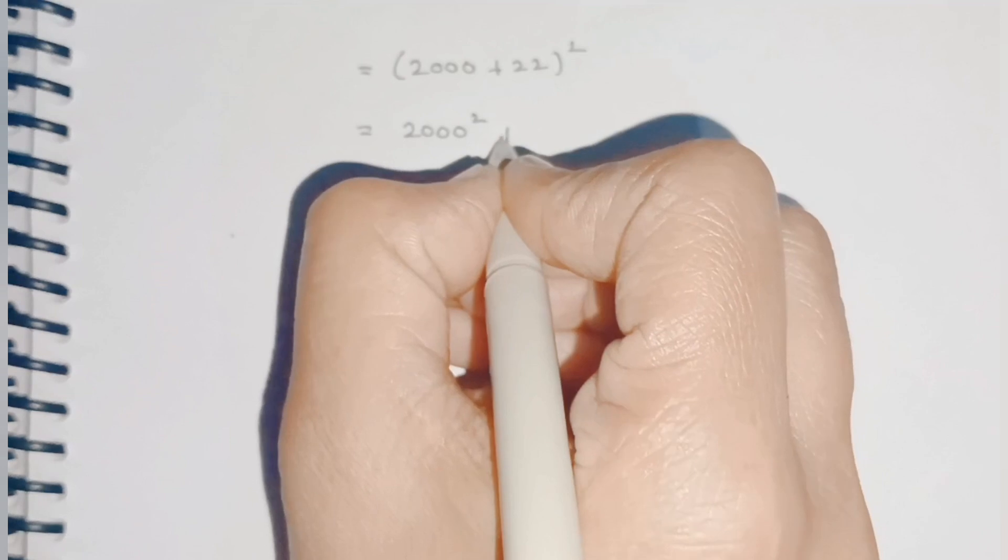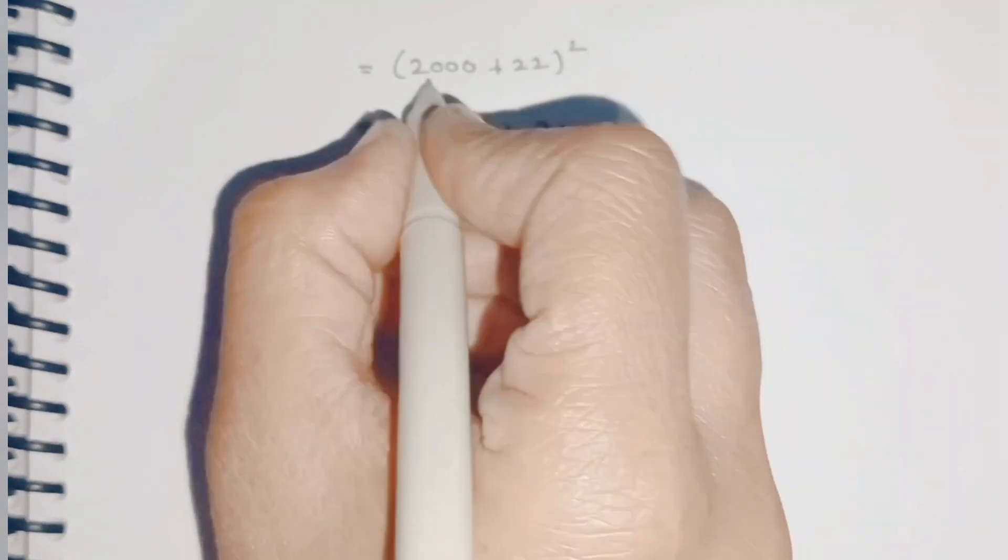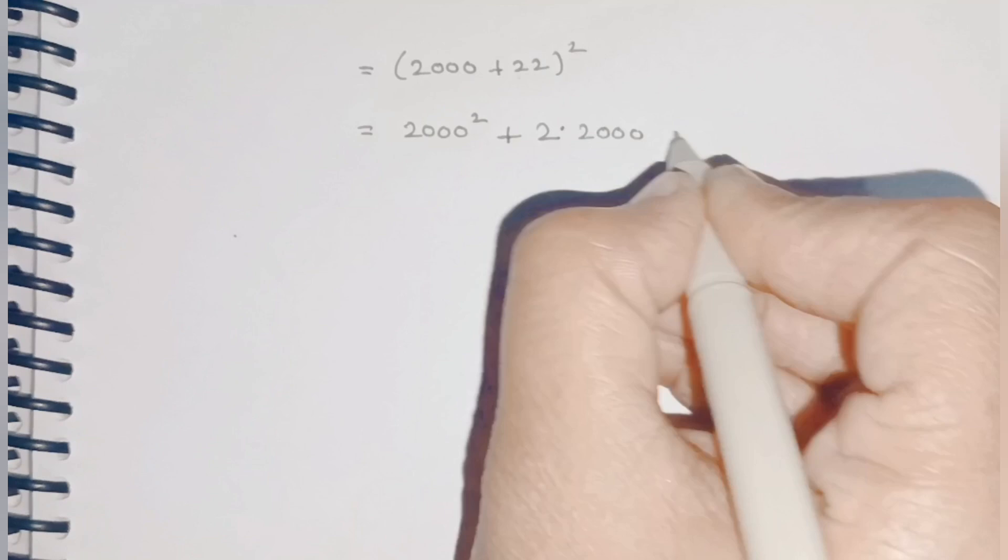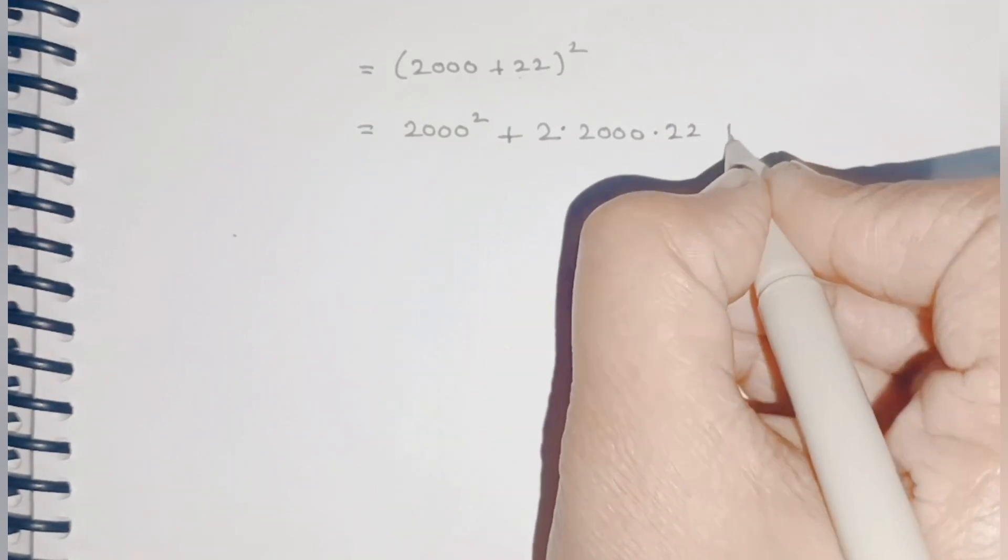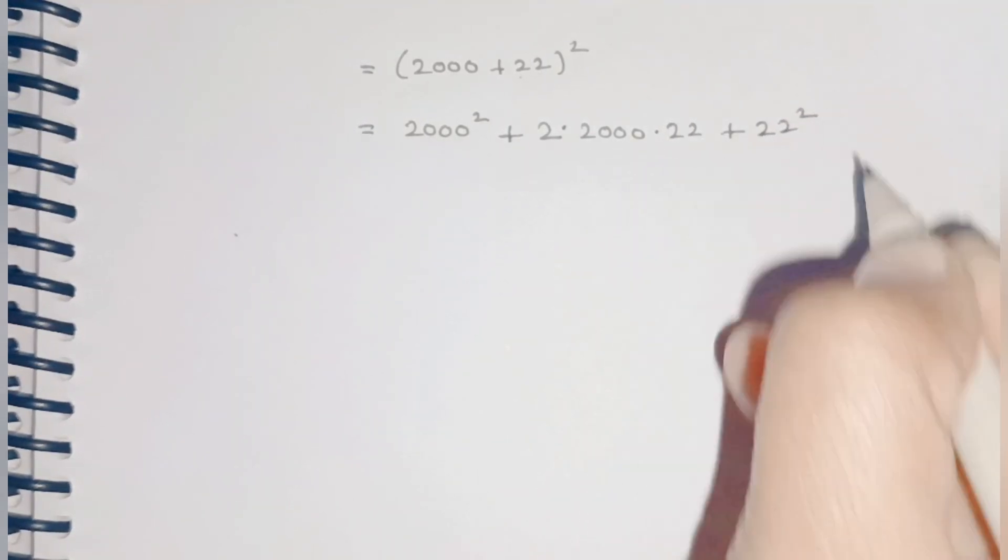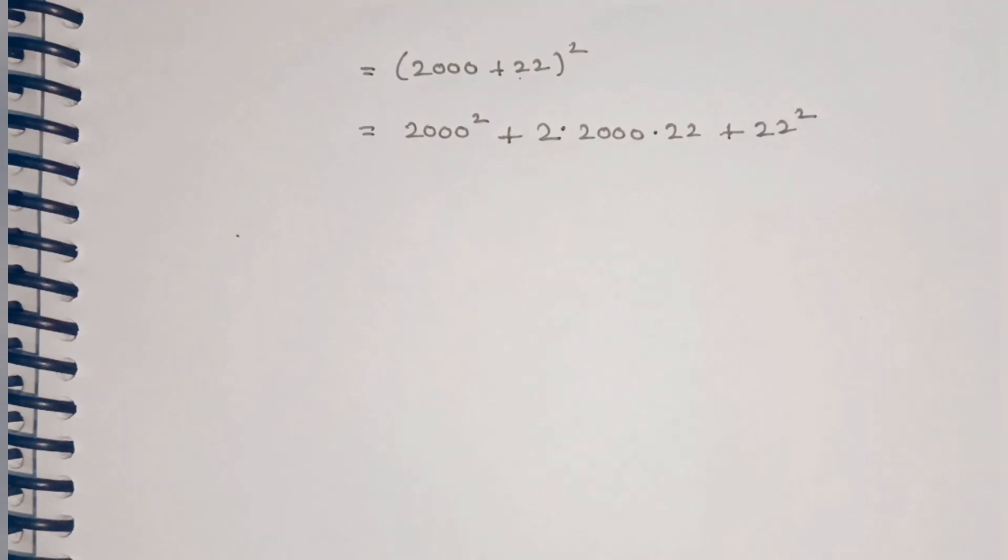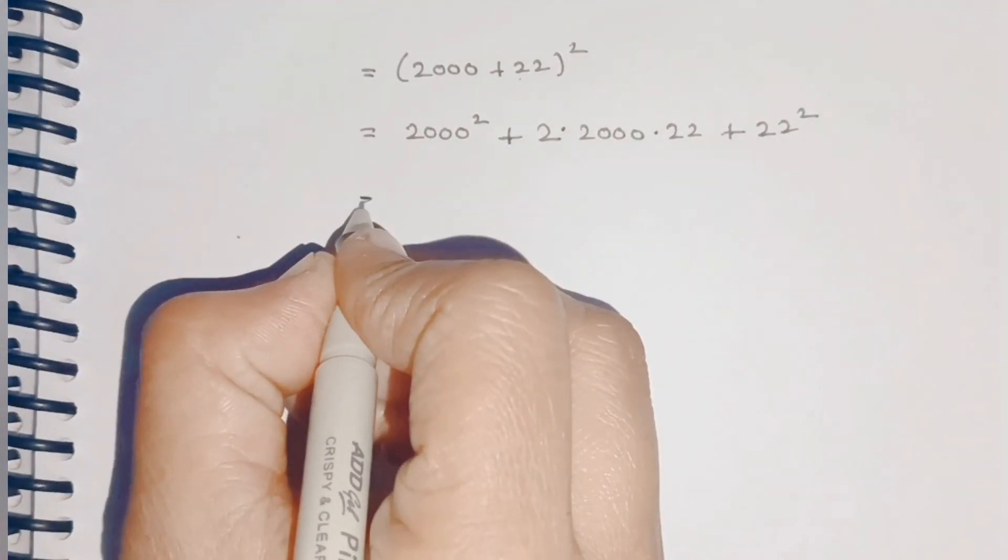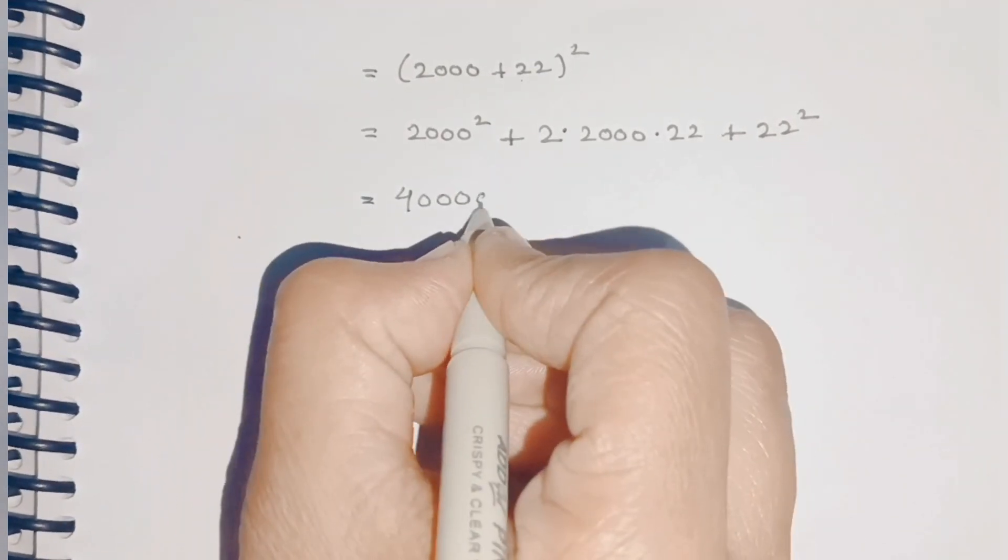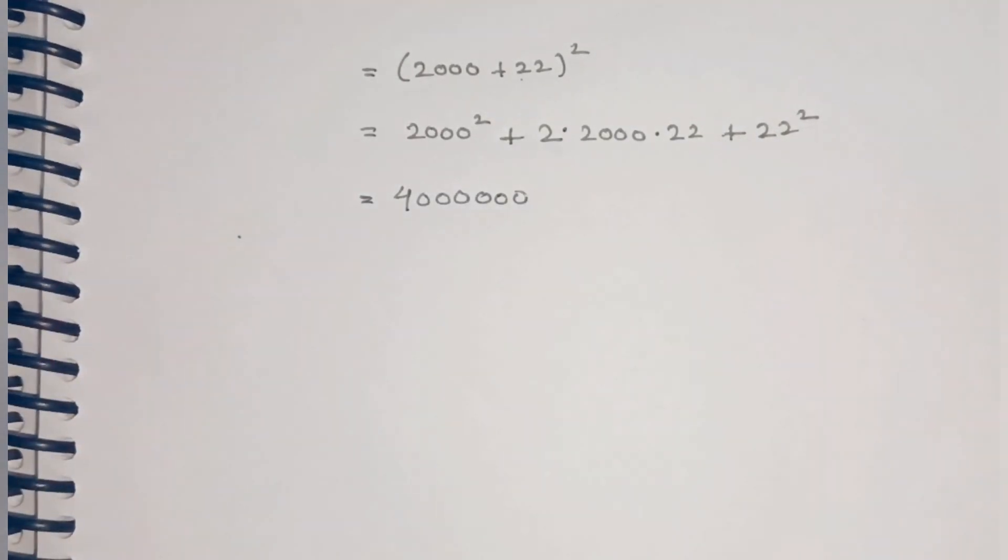Here, a = 2000 and b = 22. Opening it by the formula, this becomes 2000² + 2 × 2000 × 22 + 22². Now, 2000² = 4,000,000.